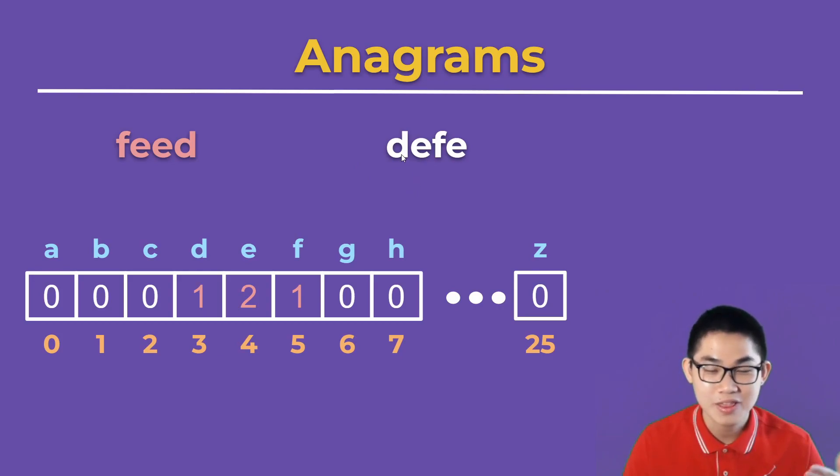Starting with D, D is at index 3, so we decrement, we minus now. This becomes 0. How about E? 2 becomes 1 here.